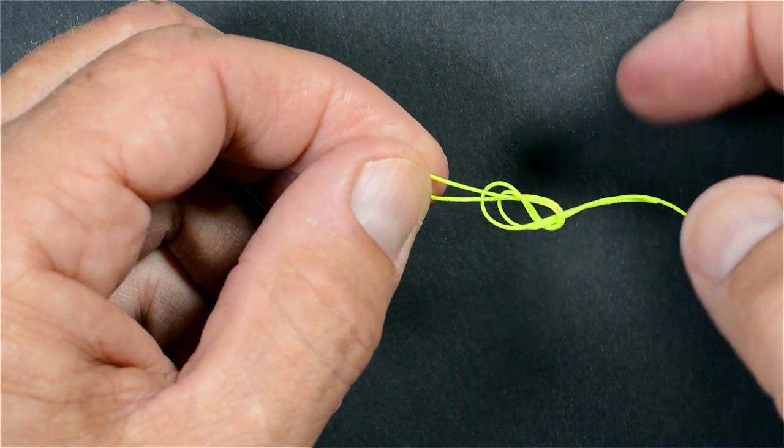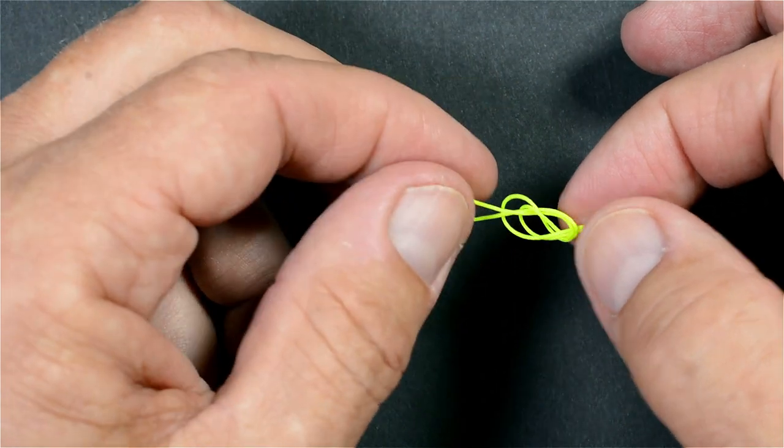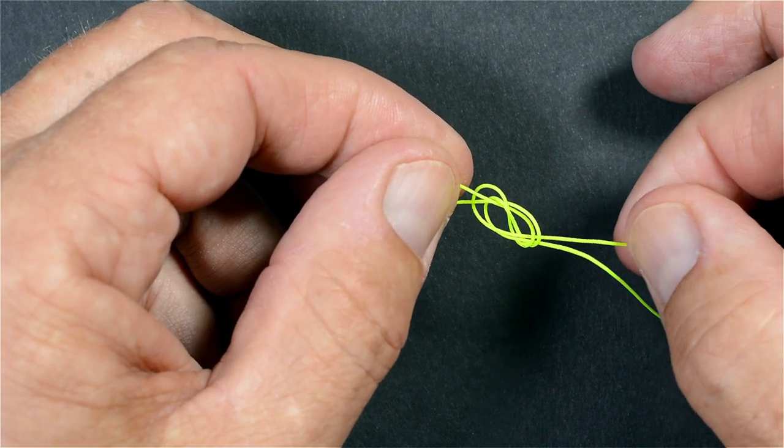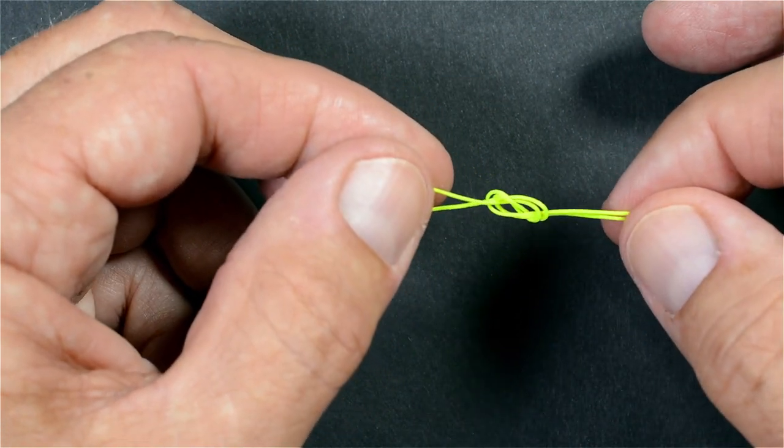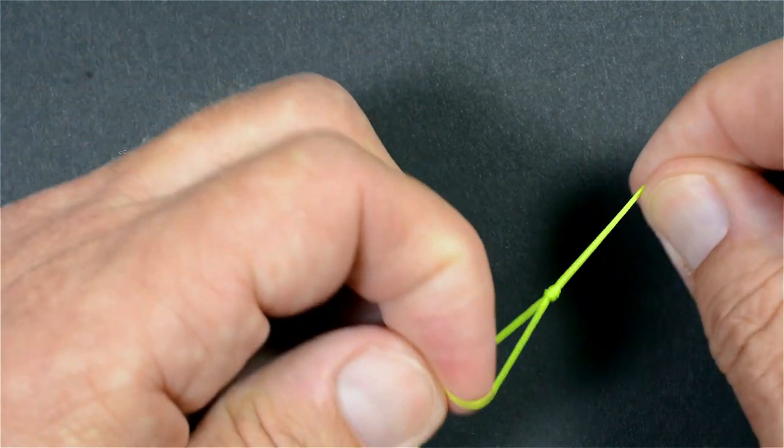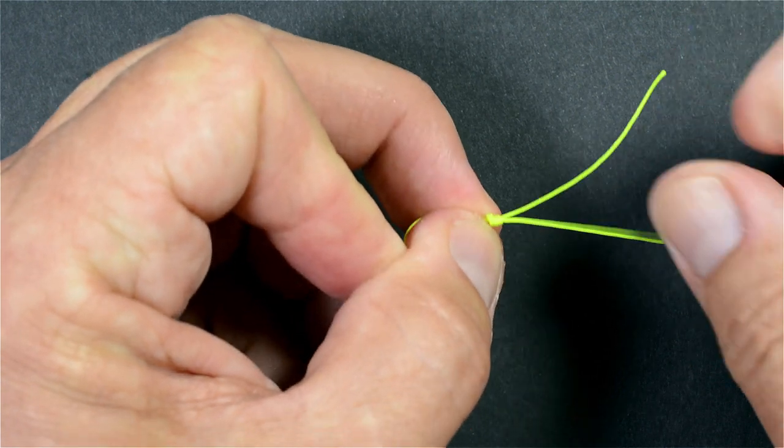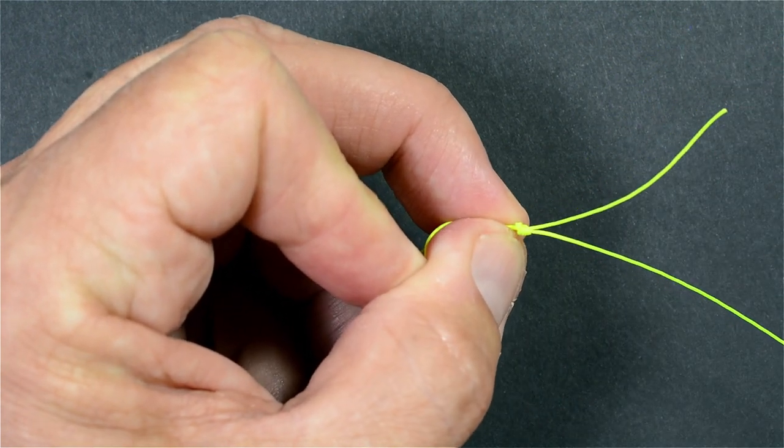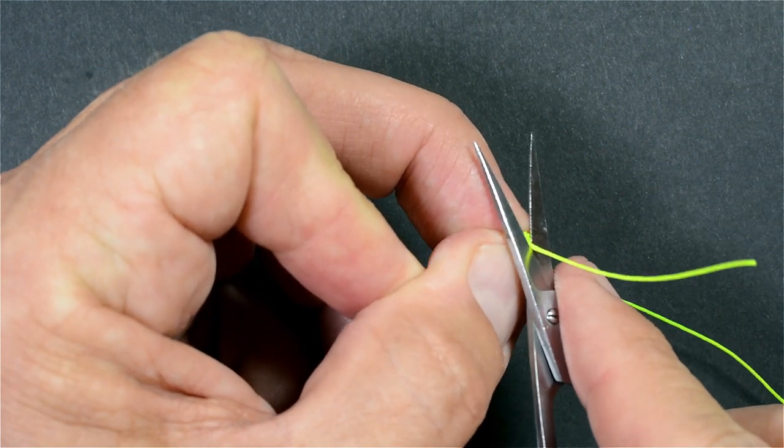Again, we get the figure-of-eight. Showing here before tightening. That's our second loop knot.